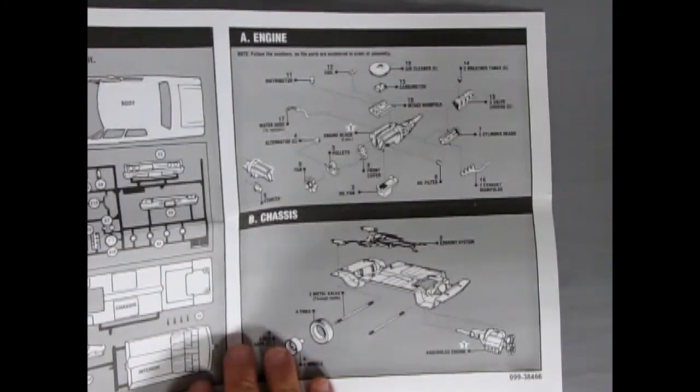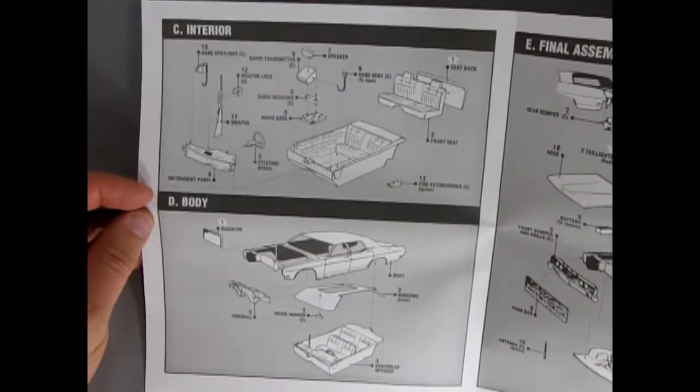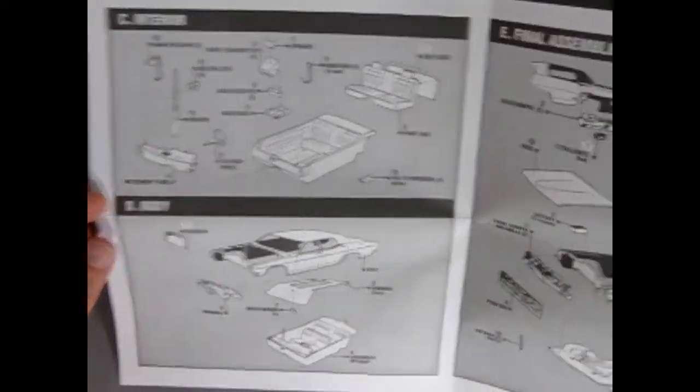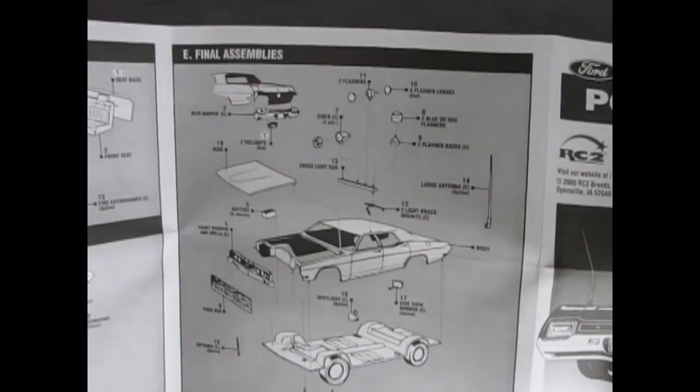And then here we've got our engine going on. This should be a quick review of the instructions. There's our interior and body, and then the final assemblies. Let's take a look at these panels in closer detail.